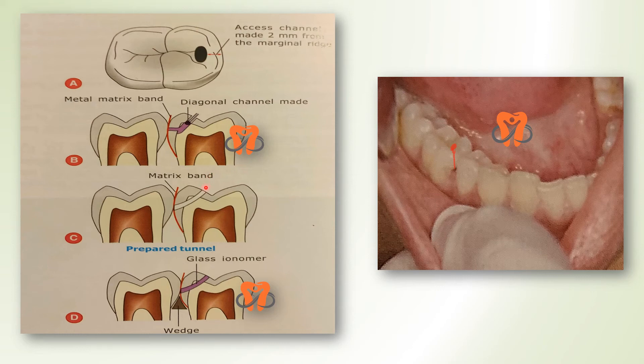Once the diagonal channel is cut, a wedge is placed between the teeth to support the matrix band, then glass ionomer cement is mixed and inserted into the channel, flowing inside to fill it. Glass ionomer is the restorative material of choice here because it flows easily into a small cavity and has the ability to remineralize demineralized dentine on the axial wall and enamel on the margins.